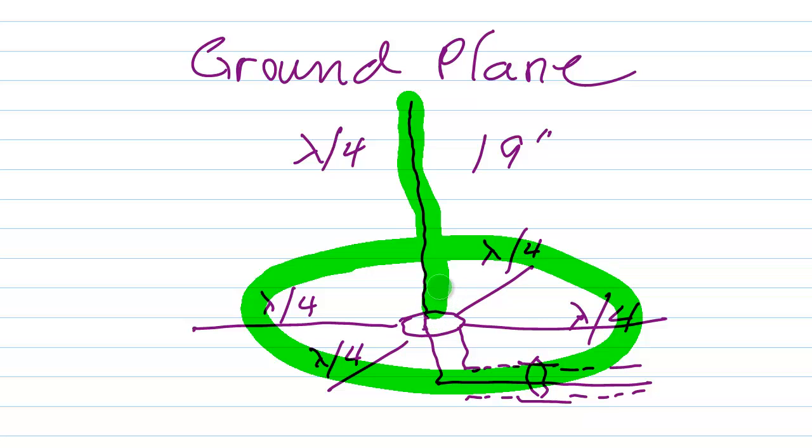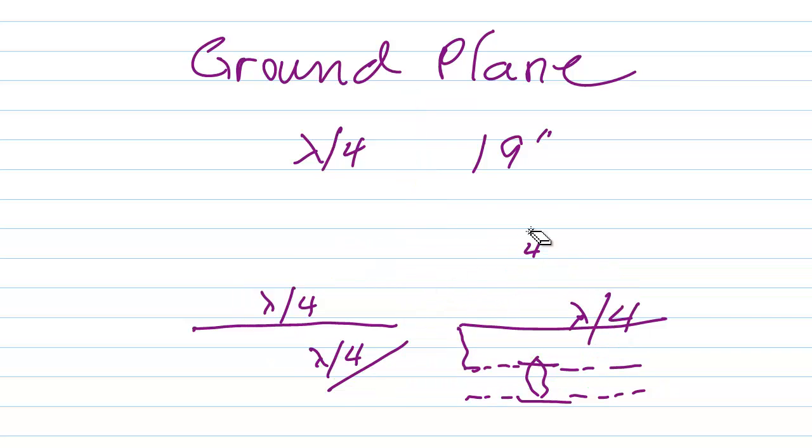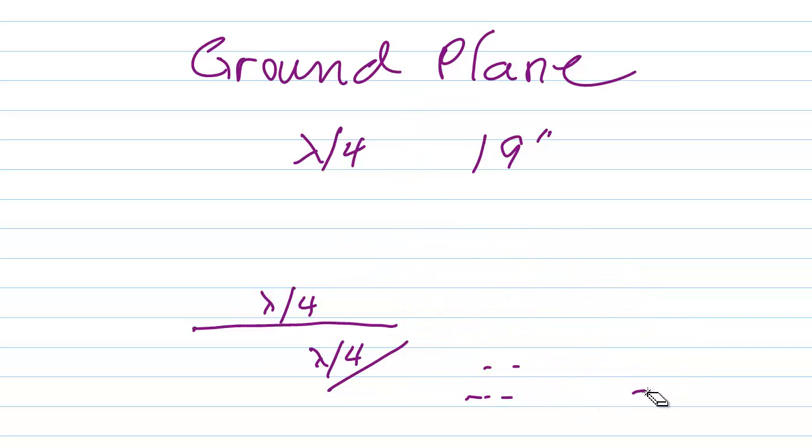He says, what I don't understand is giving the ground plane four times the wire that the radiator gets. Well, that's not necessary, really. You can get away with just one radial wire. It's just that if you want an antenna to be symmetrical so that it will develop an effective counterpoise to the ground, you want a number of wires parallel to the ground.